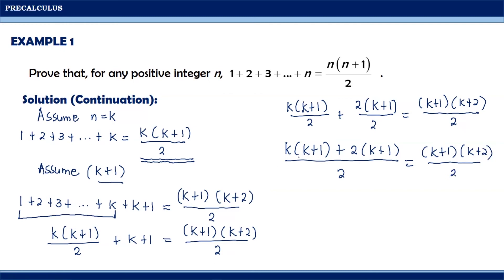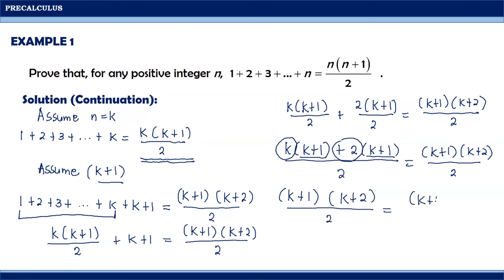Next, notice that we have a common factor of k plus 1 in the numerator, and we can factor that out, giving us k plus 1 times k plus 2 all over 2 is equal to k plus 1 times k plus 2 all over 2. Notice that the left side and the right side of the equation are equal. Therefore, the mathematical statement 1 plus 2 plus 3 plus and so on and so forth plus n is equal to n times n plus 1 divided by 2 is true.